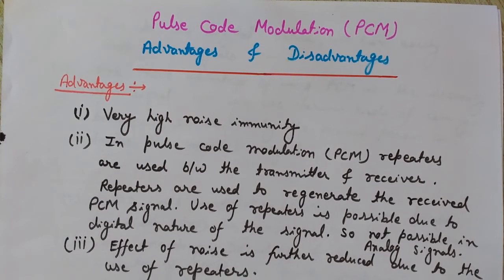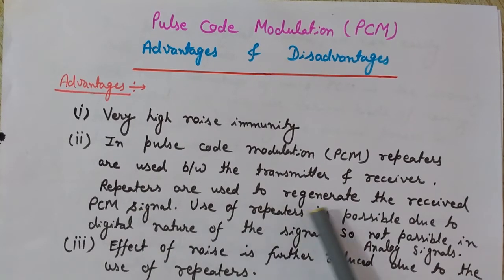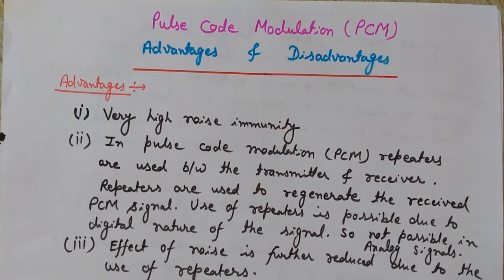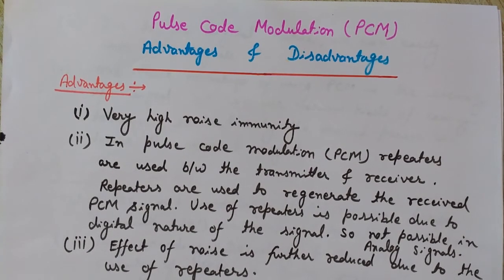The second advantage is that in PCM, repeaters are used between the transmitter and receiver to regenerate the received PCM signal. The use of repeaters is possible due to the digital nature of the signal, which is not possible with analog signals. In a PCM system, many repeaters are placed along the transmission line. They receive the signal, decode it, and retransmit the PCM data, allowing the signal to travel long distances without data corruption or noise. The signal is completely regenerated by each repeater, enabling retransmission multiple times without any degradation in quality.